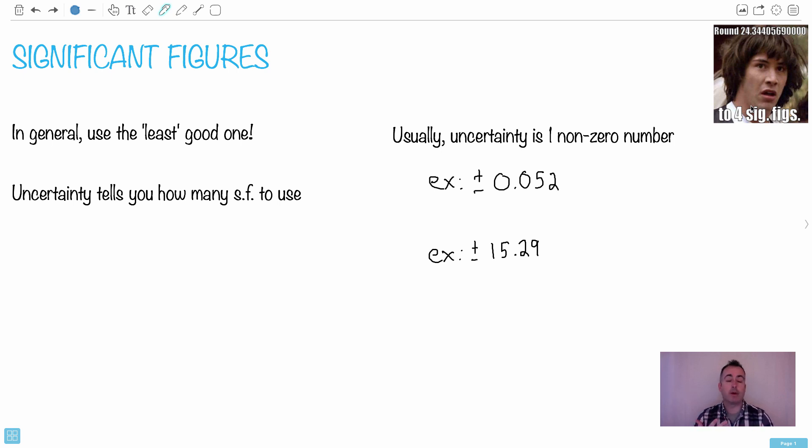A good rule of thumb is to actually use the least good one. So what I mean by that is if you've been given a whole bunch of different values. So this has to do with making measurements. So let's just say you have different choices. You have like 2.0 is one of the values you're given, and maybe like 17.458, and maybe you're given just these two, for example.